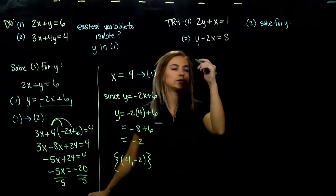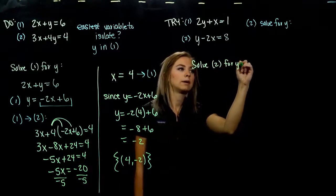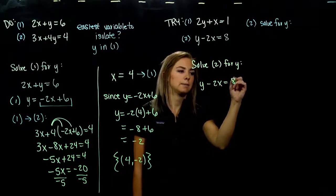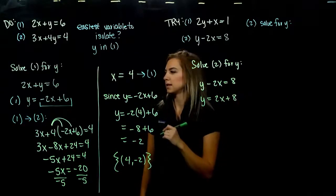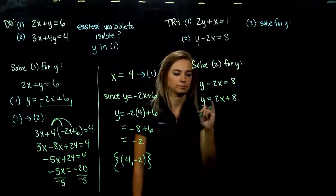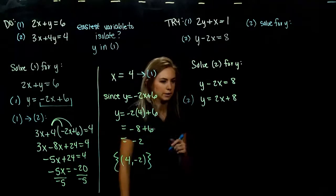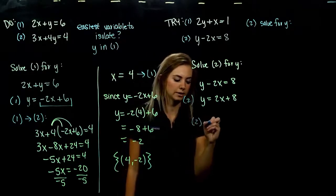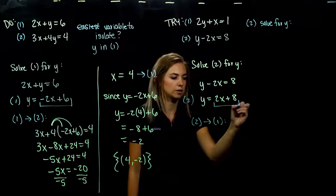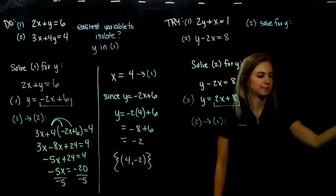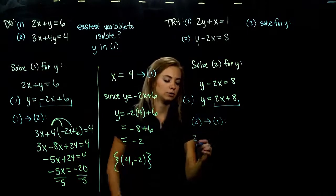Taking equation 2 and solving for y: y minus 2x equals 8, so adding 2x to both sides gives y equals 2x plus 8. This is our new equation 2, still equivalent, just in a different form. Now we take equation 2 and plug it into equation 1 — wherever I see a y up there, I plug in 2x plus 8.